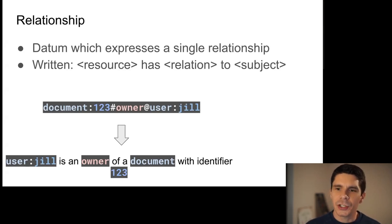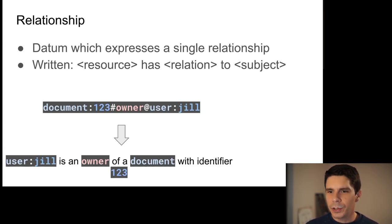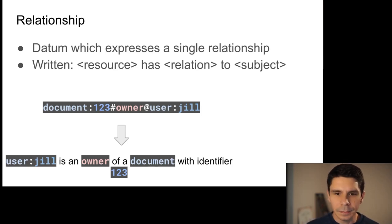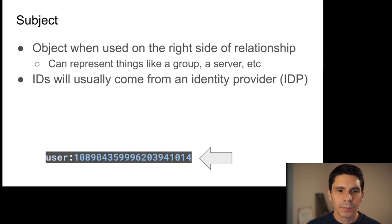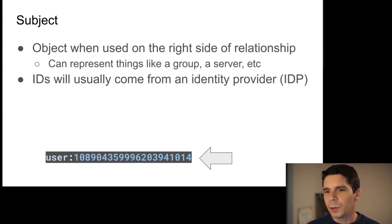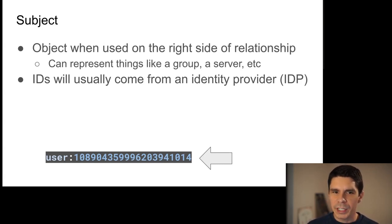In this example, the organization has an administrator, a document has an organization it belongs to, it has an owner who is a user, and a reader who is also of type user. Relationships are single pieces of data expressing how one object relates to another — written as resource, relation, subject. A human might read it as: user Jill is an owner of document 123.